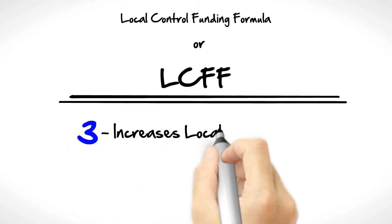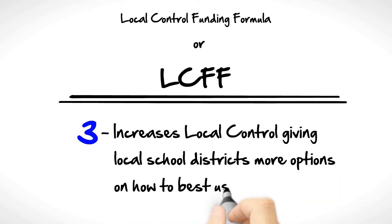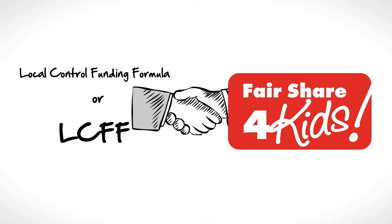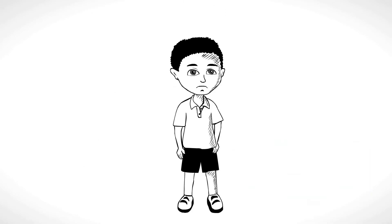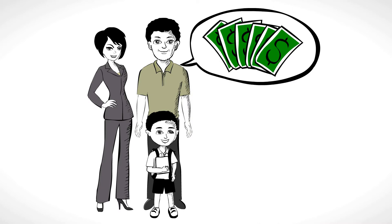3. Increases local control, giving local school districts more options on how to best use funds. Fair Share for Kids supports this plan so long as low-income students receive the support they need and parents have a voice on how monies are spent.